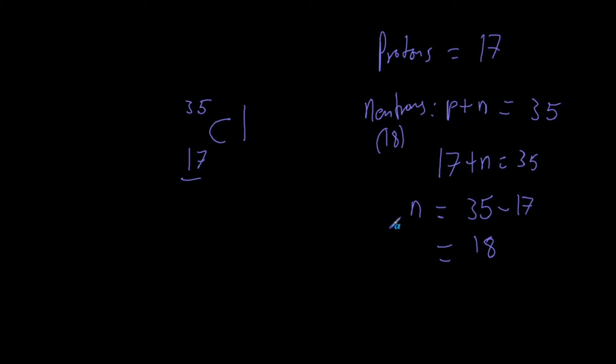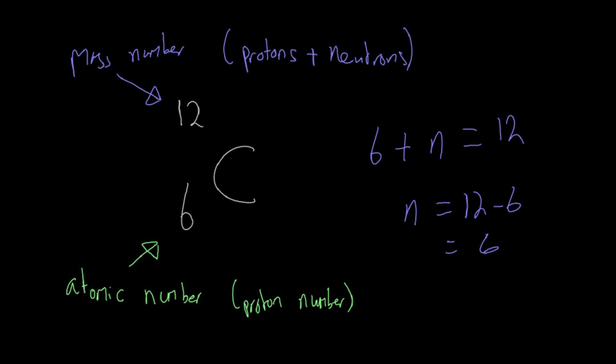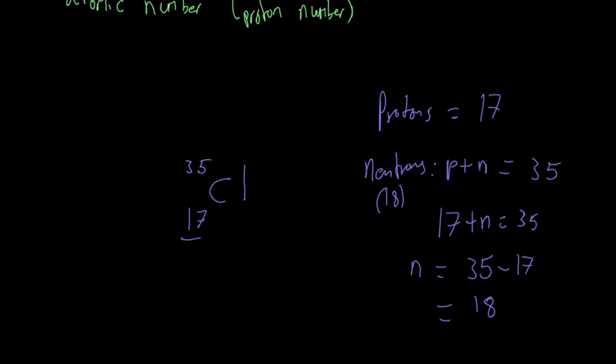Now I could also ask you how many electrons this atom is going to have. Remember that in an atom, so we're not talking about ions here, in an atom the number of electrons is always equal to the number of protons. So, a chlorine atom will always have 17 electrons, because it always has 17 protons. And by the same token, a carbon atom will always have 6 electrons, because it always has 6 protons.